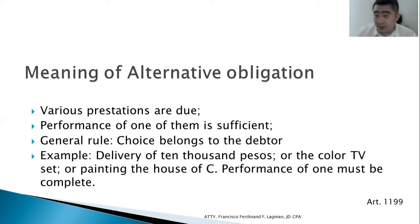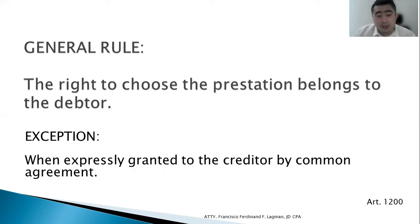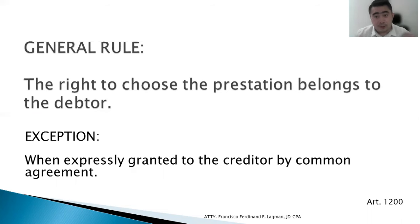The choice, as a general rule, belongs to the debtor. The debtor cannot be compelled to perform part of each prestation — for example, 5,000 pesos plus half the TV plus painting only half the house. In a legal sense, in an alternative obligation, the performance of one is sufficient and it must be complete. The exception is when the right to choose is expressly granted to the creditor by common agreement.